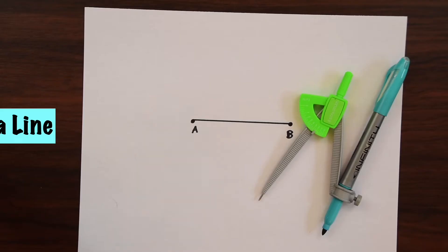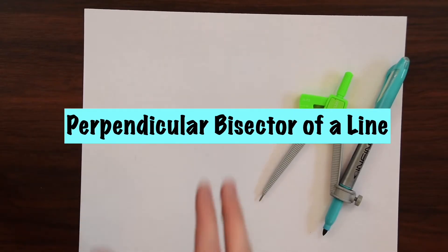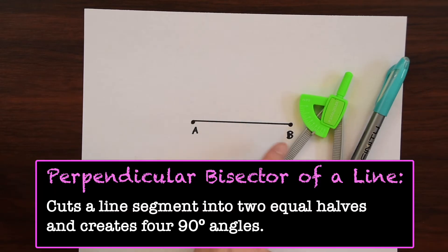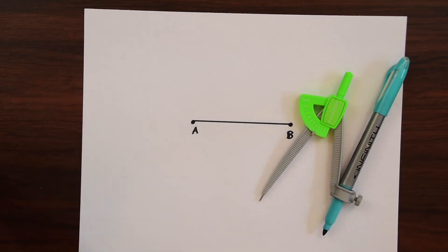So just to go over what a perpendicular bisector of a line does, it cuts a line segment in half. So we have a line segment here, A, B. We're going to be finding the midpoint and it's going to create these two equal halves. And at the same time it is bisecting the line, it's also going to be perpendicular. So we're going to end up having 90 degree angles about the line.